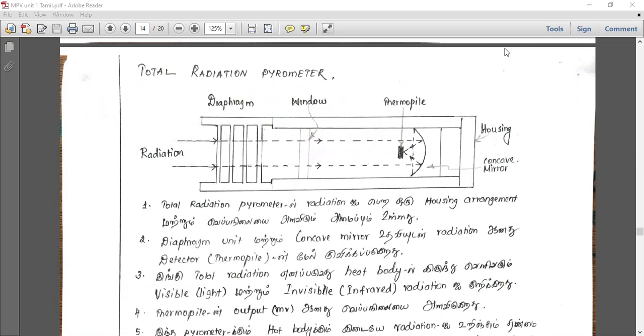The pyrometer is a non-contact type. This is a total radiation pyrometer. It measures both visible and invisible radiation. Temperature is measured using these two radiations.